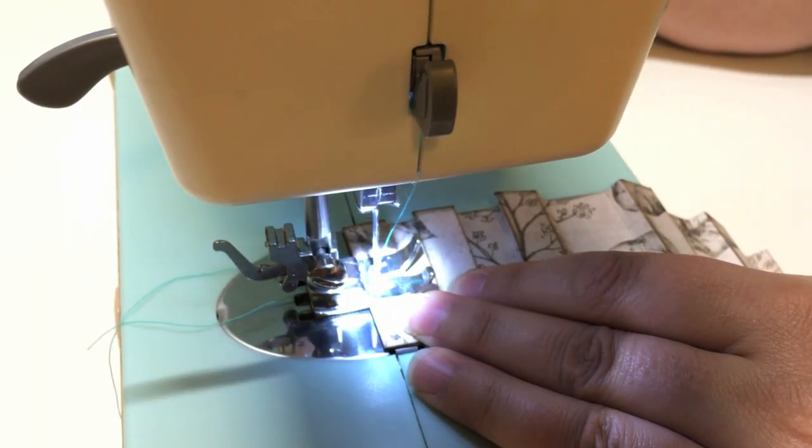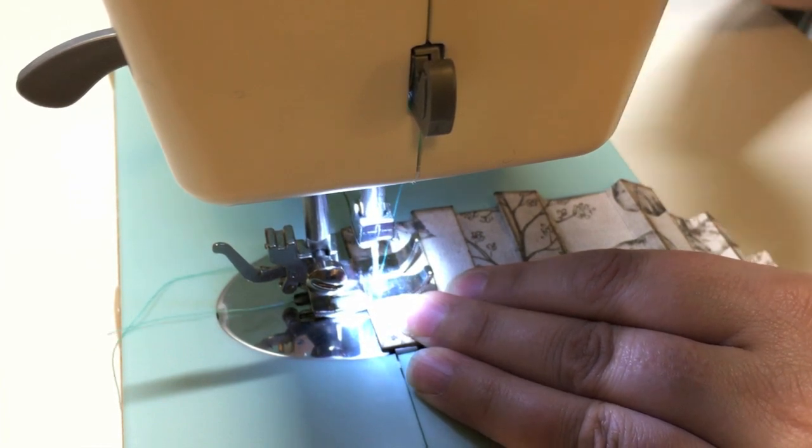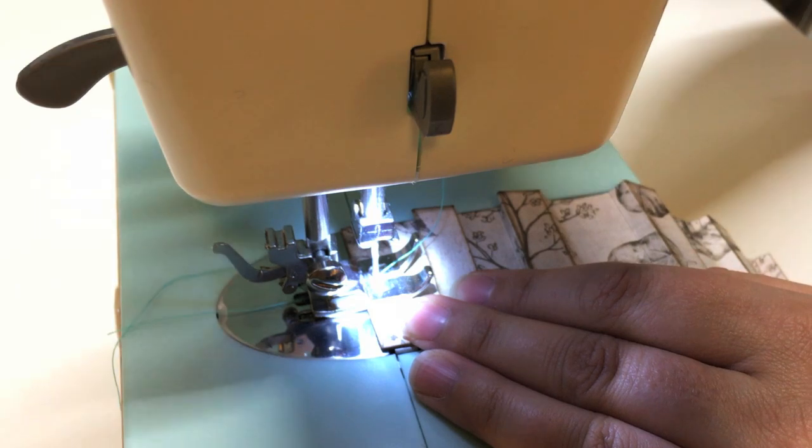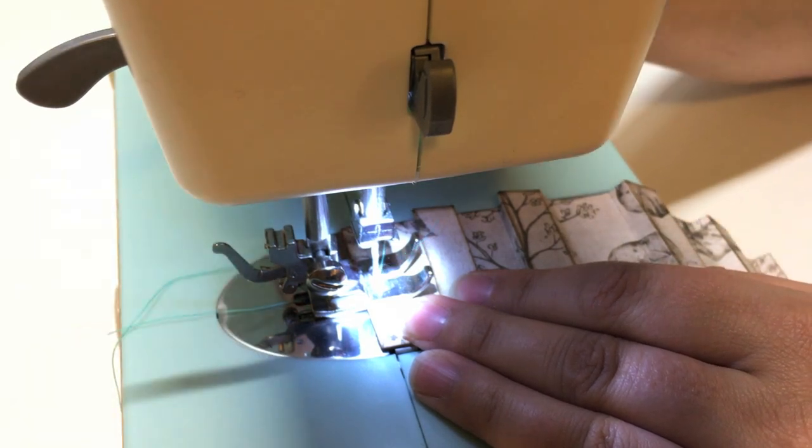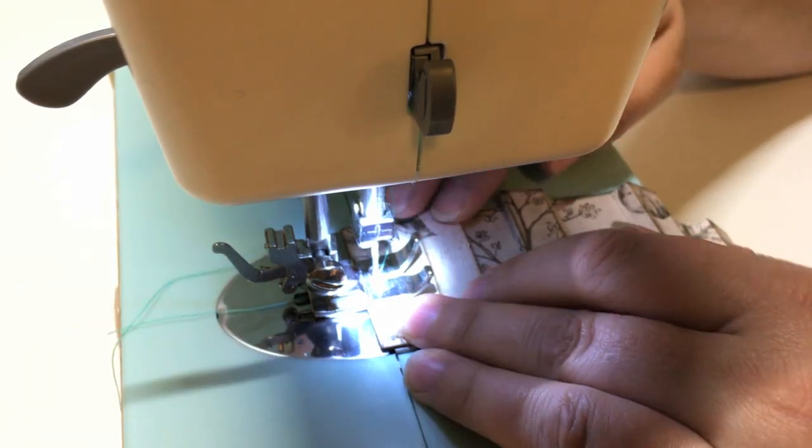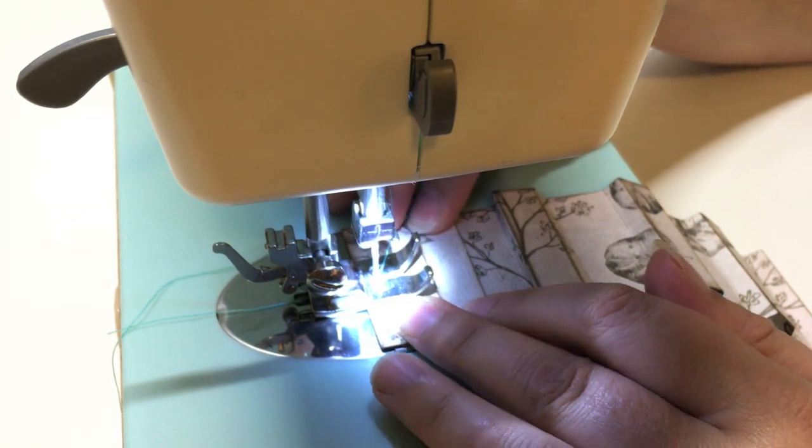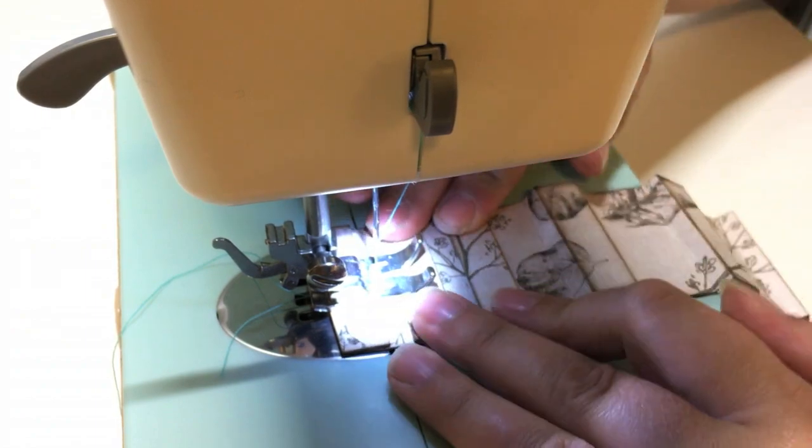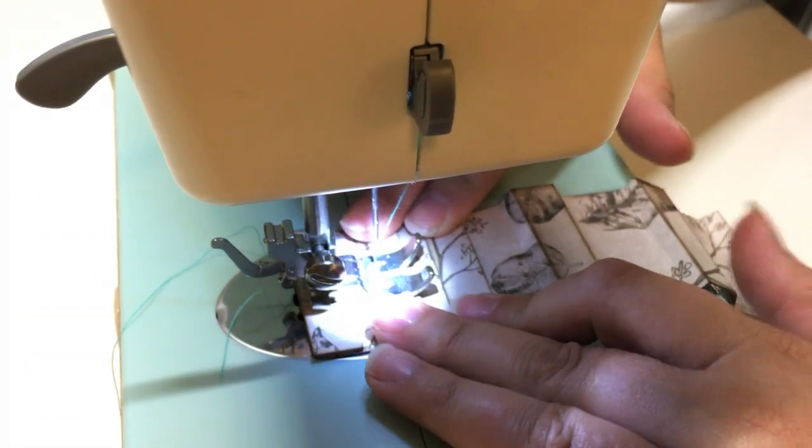Next I'm using my We Are Memory Keepers Stitch Happy Sewing Machine. I love this machine because it's made for sewing on paper and you can clean the little paper piercing pieces out from underneath with your vacuum cleaner. I'm just lining it up in the center for the box pleats. Sorry that light's a little bright for my camera.